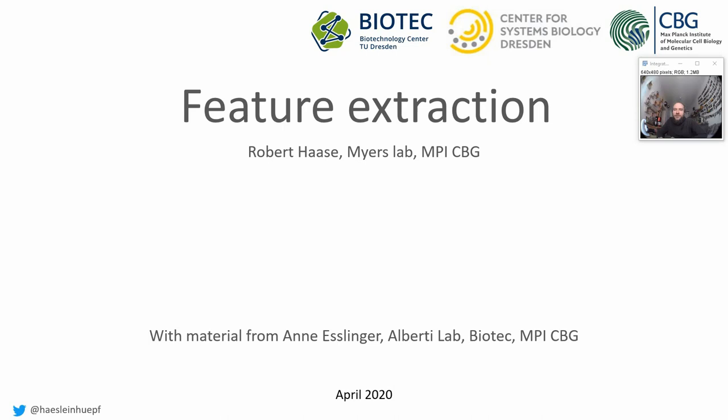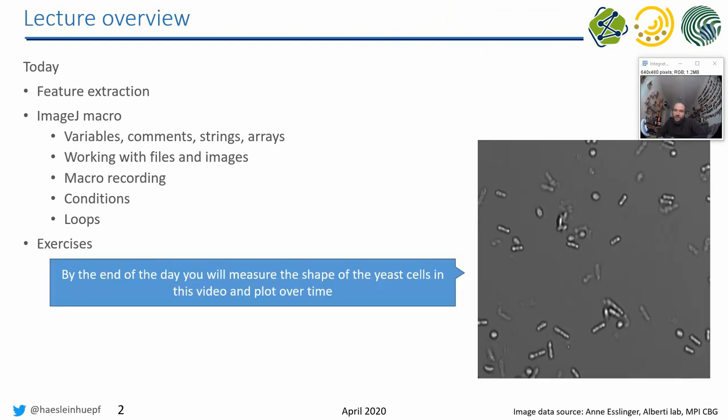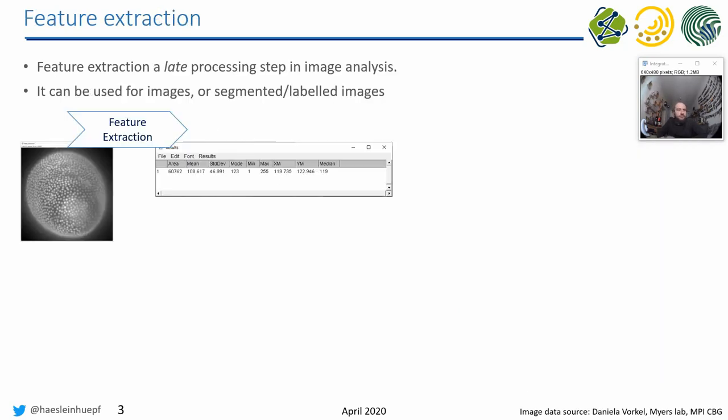Welcome back, everyone, to the lecture about Applied Bioimage Analysis. This week will be about feature extraction, and afterwards I will give you an introduction to ImageJ Macro. By the end of the day, you will be able to analyze this kind of dataset I got from Anne Esslinger from Alberti Lab here in Dresden. You see here that there are some yeast cells swimming around, and they are changing their shape over time. We want to measure shape over time, so therefore automation is kind of necessary for the first time.